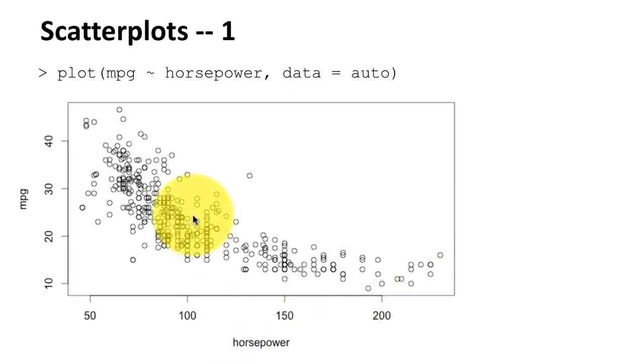So this is the plot you get, of course. As we expected, mpg is on the y-axis, horsepower is on the x-axis, and we can expect to see this trend. That as the horsepower increases, fuel efficiency is going to decrease. This is expected. Again, you're seeing a somewhat curvilinear relationship. Clearly, you can see there's a kind of a curve that's going on here.